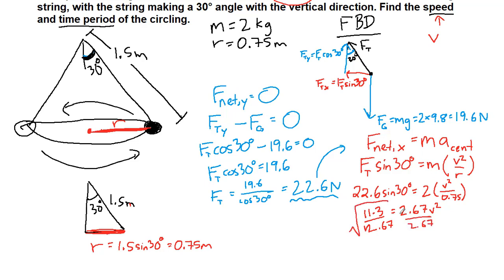And take the square root of both sides. So this will cancel and the square root of v squared is going to give us v on the right, and the square root of 11.3 divided by 2.67 all of that can go into our calculator and we will get 2.06 meters per second. So just a little bit over 2 meters per second to go all the way for the speed as it's going around in circles. So that's one of the two things we're looking for.